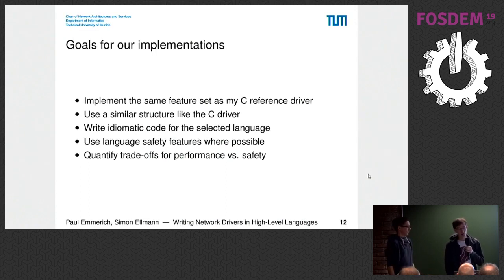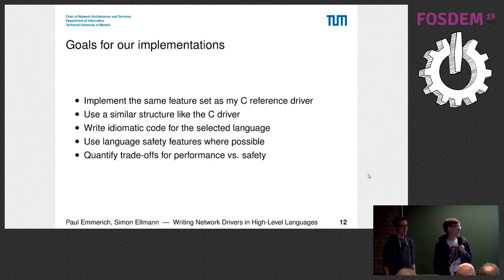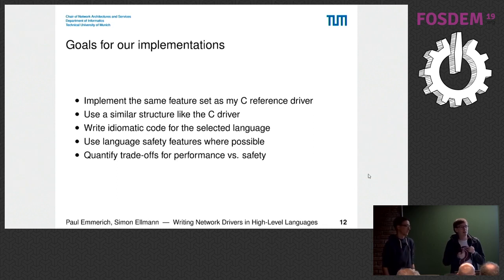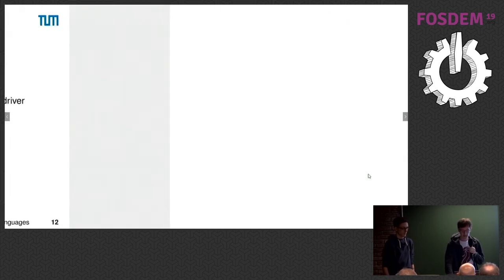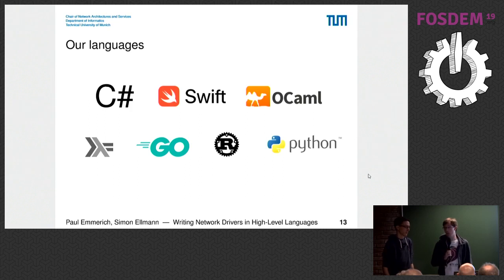What I wanted from the student drivers was the same feature set as my C reference driver — same structure, similar architecture, same features. At the same time, they should use all language safety features where possible, because we wanted safer drivers with fewer bugs. In the end, we wanted to compare all languages on speed, which safety features could be used, and how much performance it costs to enable a safety feature — like the impact of having a garbage collector in the driver. We now have implementations fully working in C#, Swift, OCaml, Haskell, Go, Rust, and Python.